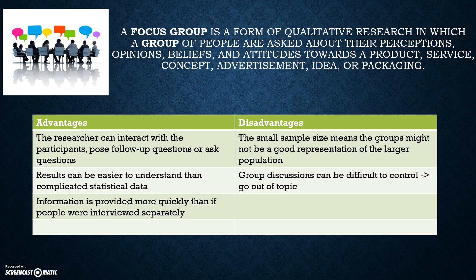However, the sample size may not be a good representation of the larger population, therefore it needs to be a random sample. For example, if 10 people are chosen out of 100 and they have the same background or origin, their answers might be similar, or they might be pressured into answering. Disadvantages also include that group discussions can be difficult to control, therefore they might go off topic.